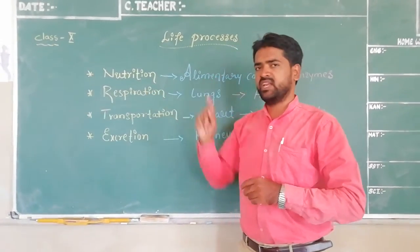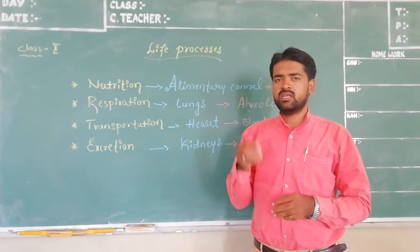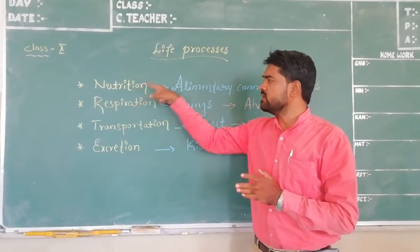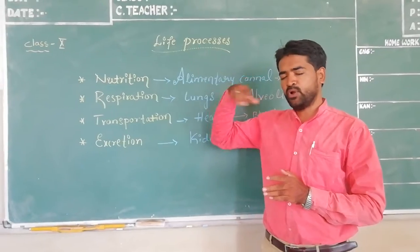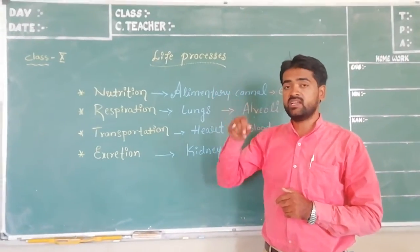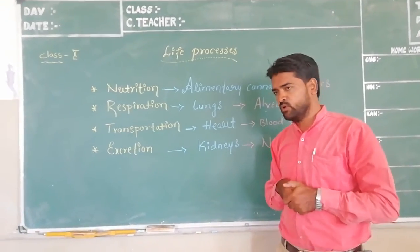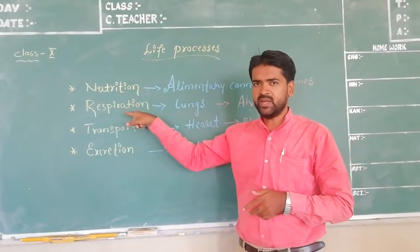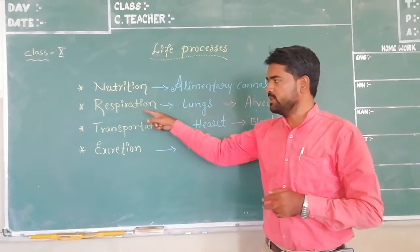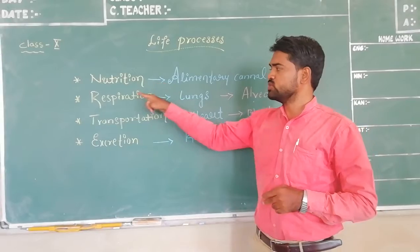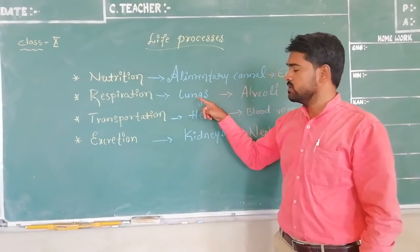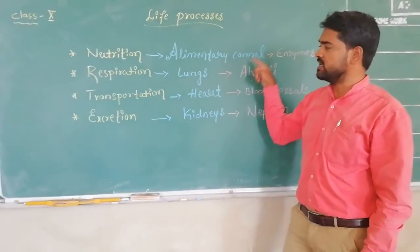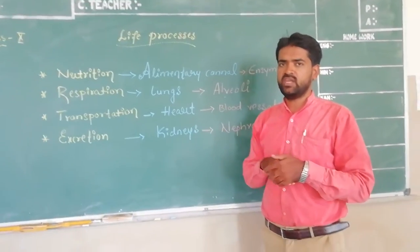The second process is respiration. Respiration is nothing but the absorption of the energy which is produced during nutrition. The energy which is present in the food we obtain is going to be absorbed by the cells — that is called respiration. In respiration there are two types: aerobic respiration and anaerobic respiration. The process of respiration takes place in the lungs with the help of the alveoli, which are structures present in the lungs that help in the exchange of gases.